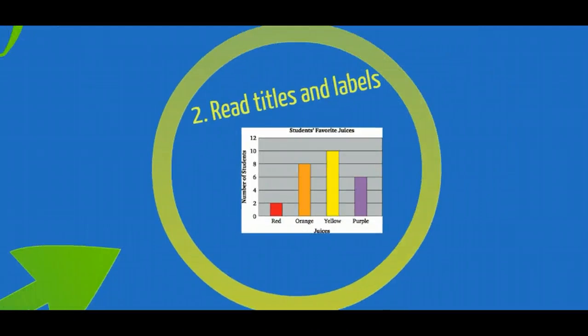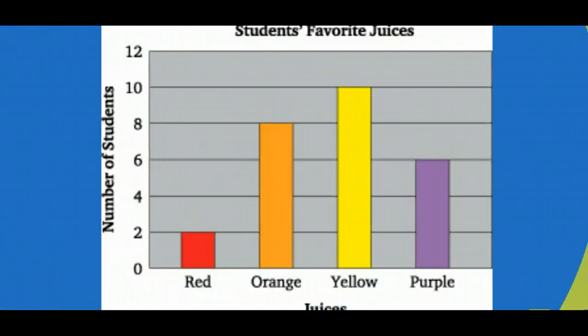The next thing to be aware of is that every graph, no matter which type, has titles and labels, and these titles and labels — even the smallest information on a graph — are very important. The small print on a graph can tell you how much or in what ways things are being measured, which can totally change the way you interpret the graph. One of the most important rules to analyzing a graph is to read every tiny title and label. If you do not read everything closely, you will misinterpret the graph. For example, this bar graph catalogs students' favorite juices, and the title tells us what it's measuring.